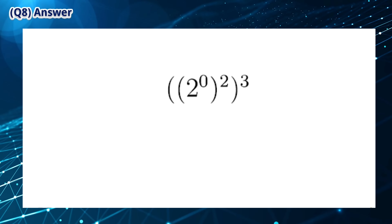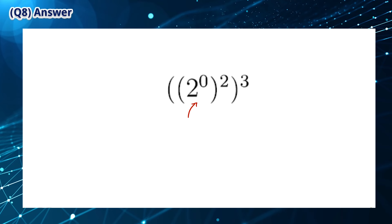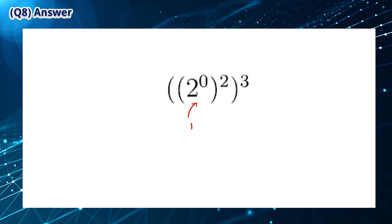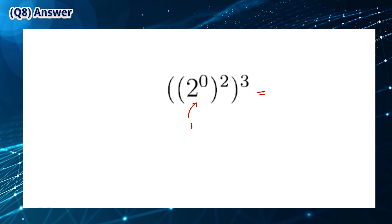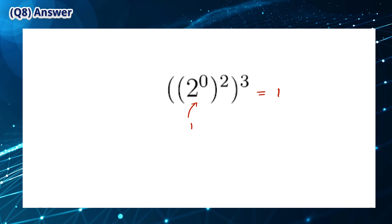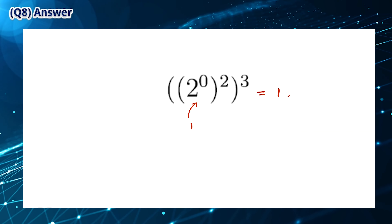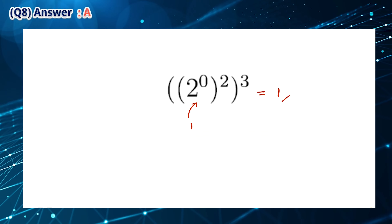2 to the power of 0 is equal to 1, and we know that 1 to the power of anything is also equal to 1. This means that this expression has to be equal to 1. So the answer is A.